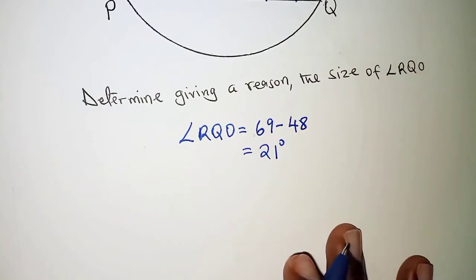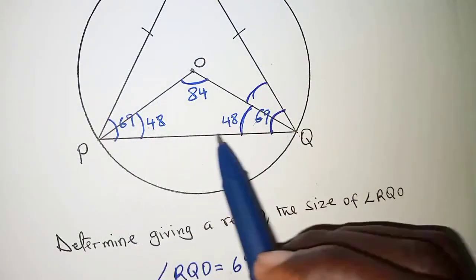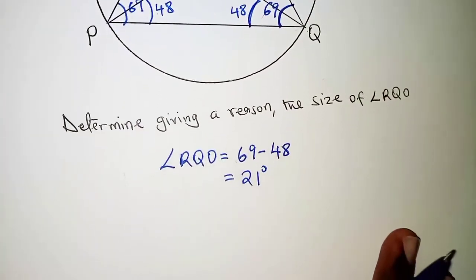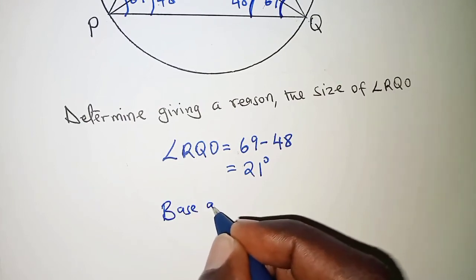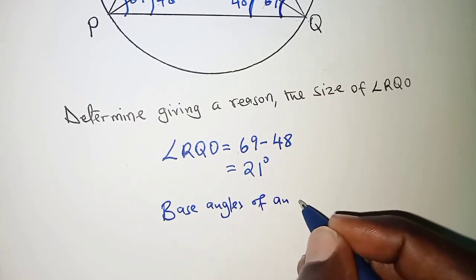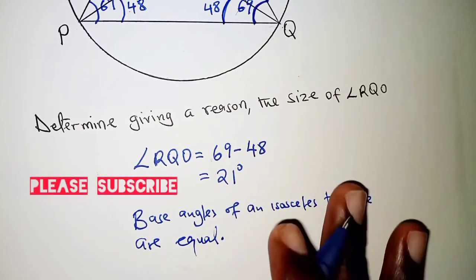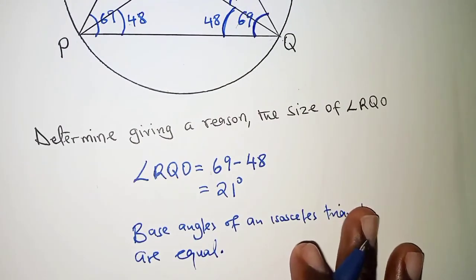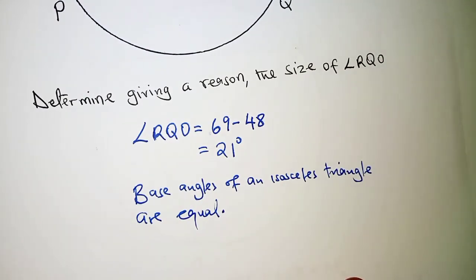The reason being that the base angles of an isosceles triangle are equal. We write that base angles of an isosceles triangle are equal. And that is it for this question. Thank you for watching. Hope to see you in the next video.